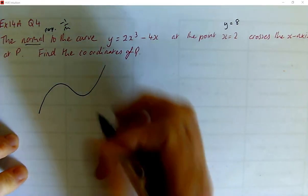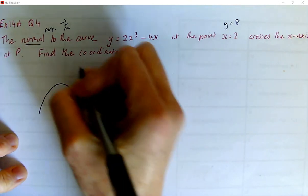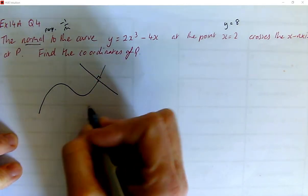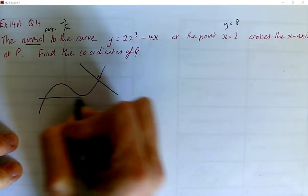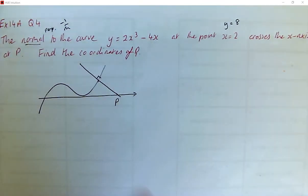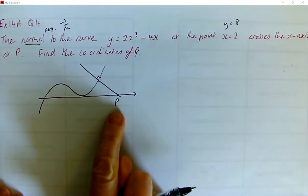So the normal to that curve, let's just suppose it's over here somewhere. So the normal is going to cross the x-axis, let's have an x-axis somewhere at P. So this graph is a load of rubbish, but it just kind of vaguely gives me some kind of idea of what's going on. And find the coordinates of P.